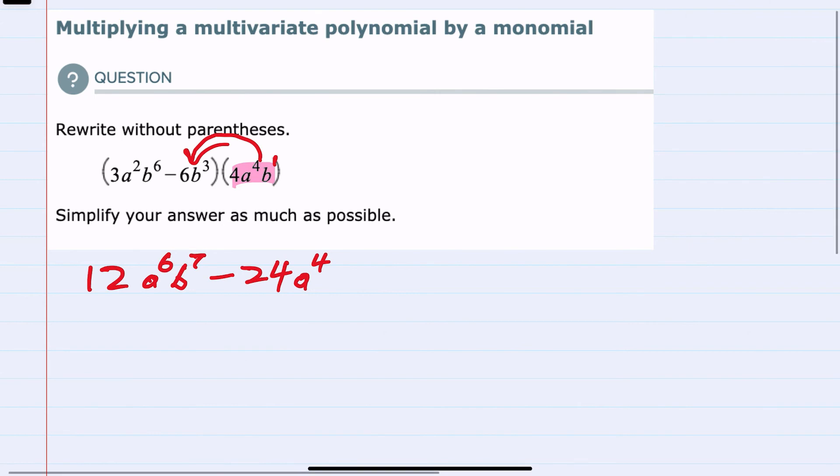But for the b's, I do have b^3 times b^1. We keep the base and add the exponents for multiplication. So 3 plus 1 is 4, and we have multiplied to remove those parentheses.